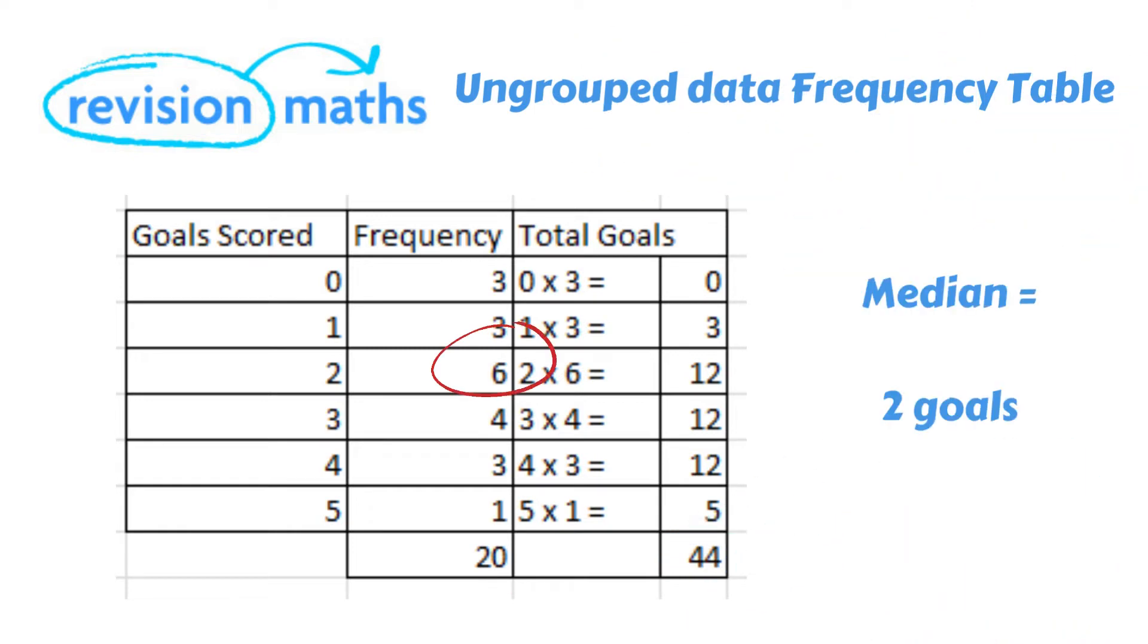To find the median we look for the middle value in the data set. So out of 20 games the halfway point is between the 10th and 11th game. Both of these are in the third group so two goals scored would be the median value. The mode is the most observed data. The most common goals scored is also two as this frequency occurred in six of the 20 games.